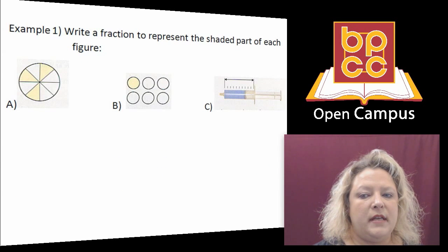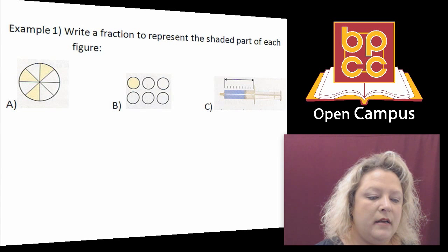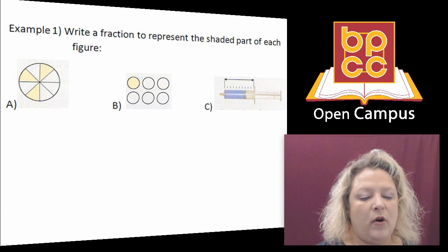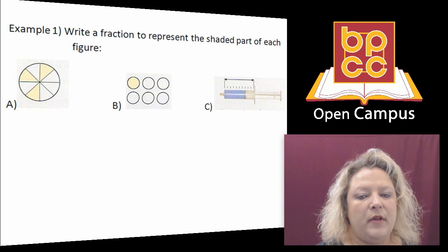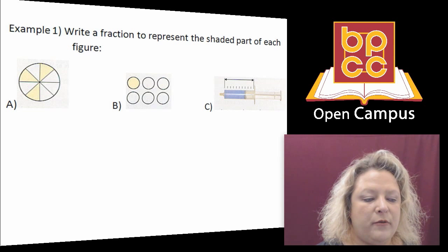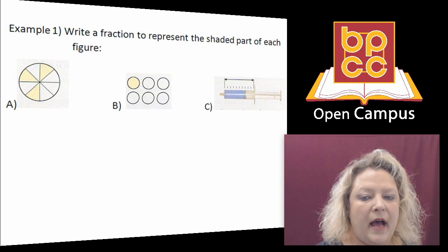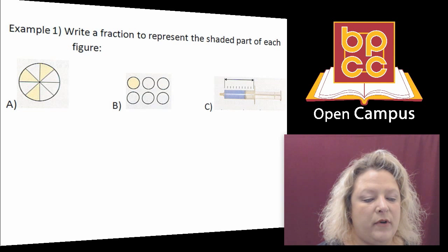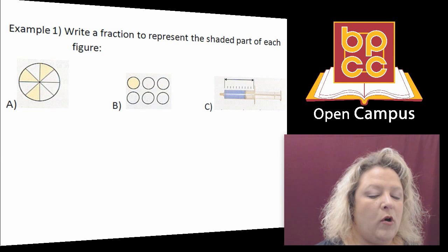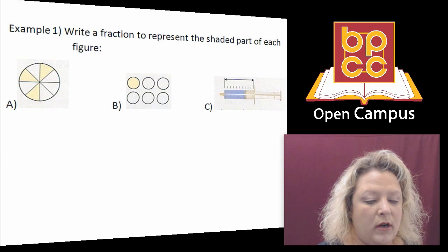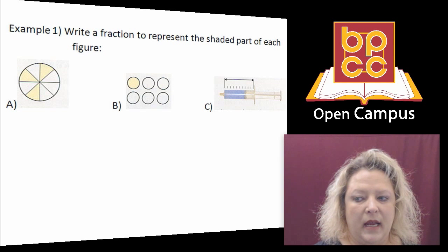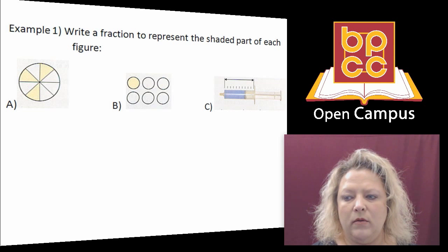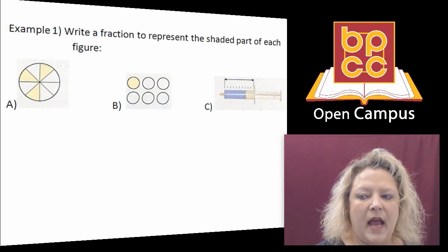These examples show you what fraction is shaded and all of these notes are going to be worked out for you on the website so that you can download them. In example A, you'll notice there are three pieces that are shaded yellow out of eight, so the fraction would be three-eighths. Part B would be one out of six, so that would be one over six. And the last part would be seven out of ten.